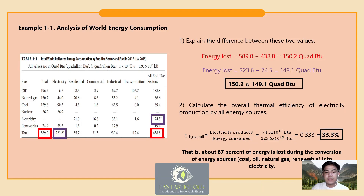The next task is calculating the overall thermal efficiency of electricity production by all energy sources. The thermal efficiency of a power plant is defined as power produced divided by energy consumed. Substituting the values yields an answer of 0.333, or 33.3 percent. We can conclude that about 67 percent of energy is lost during the conversion of energy sources into electricity.